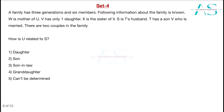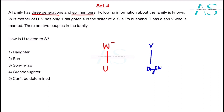Question 4: A family has 3 generations and 6 members. W is the mother of U. V has only one daughter. X is the sister of V. S is T's husband. T has a son V. Let's build the diagram starting with T — T has a son V, and S is T's husband, making T female.